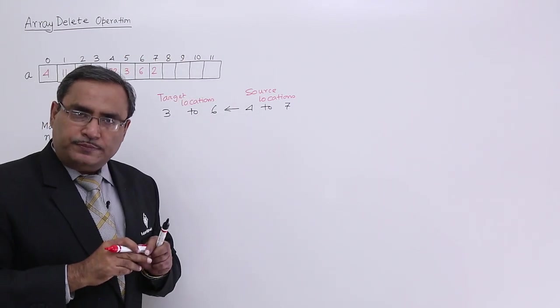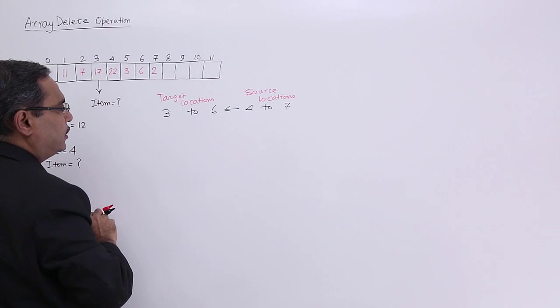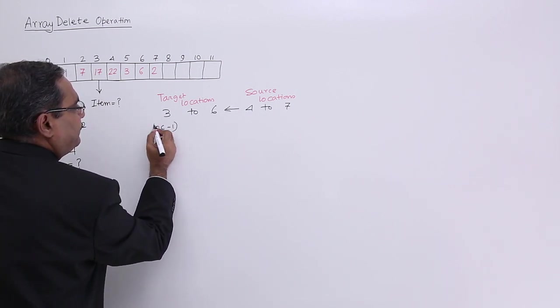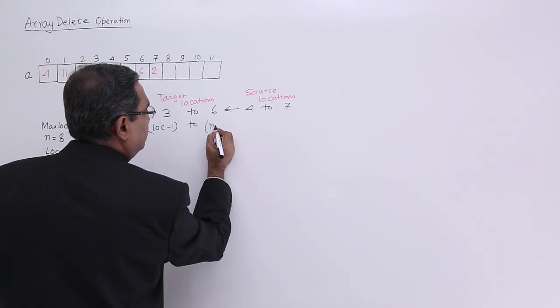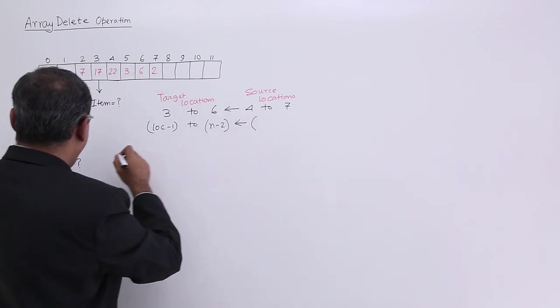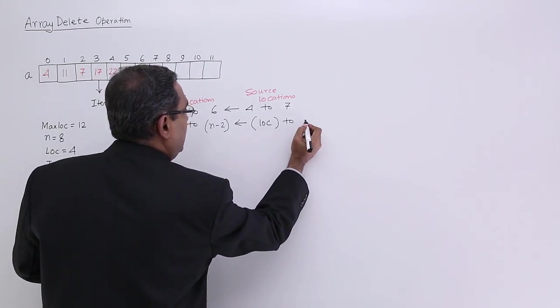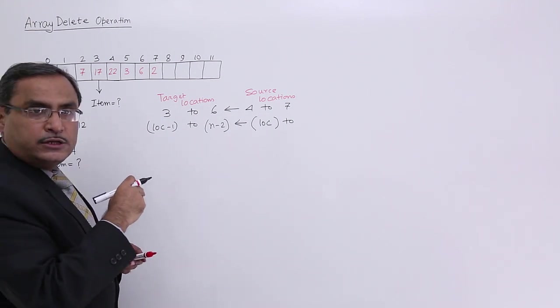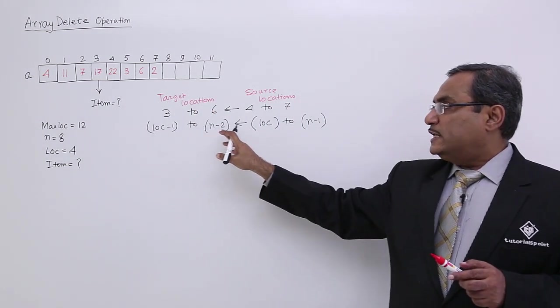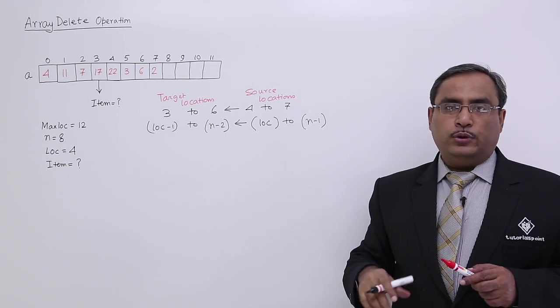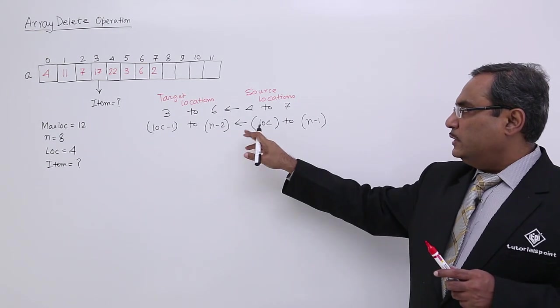So 4 to 7 is my source location. So what is 3? 3 look at here and tell me, what is 3? 3 means lock minus 1. What is 6? 6 means n minus 2. What is 4? 4 means lock. And what is 7? 7 means n minus 1. So I have expressed this 3, 6, 4, 7 into the respective variables. With respect to the variables I have put, so I have got my respective forms with the variable names.